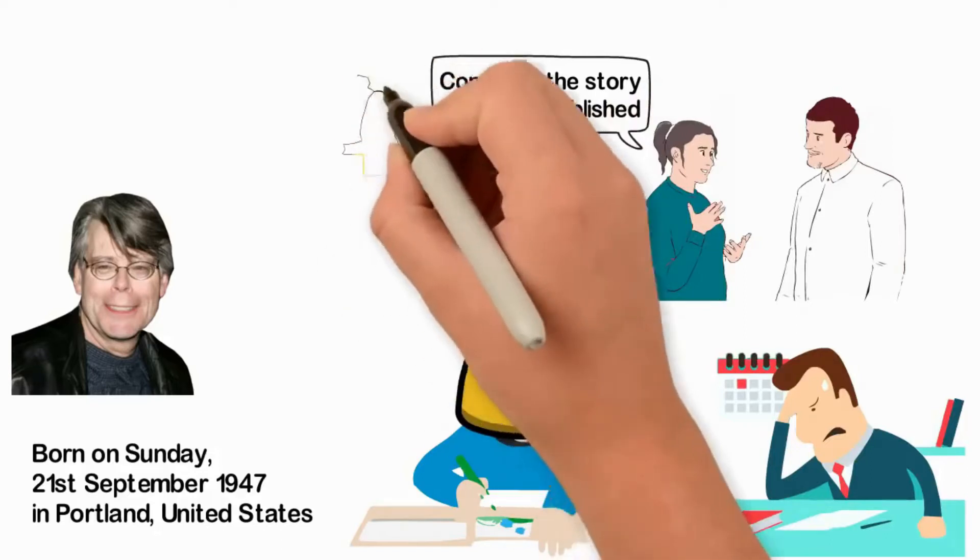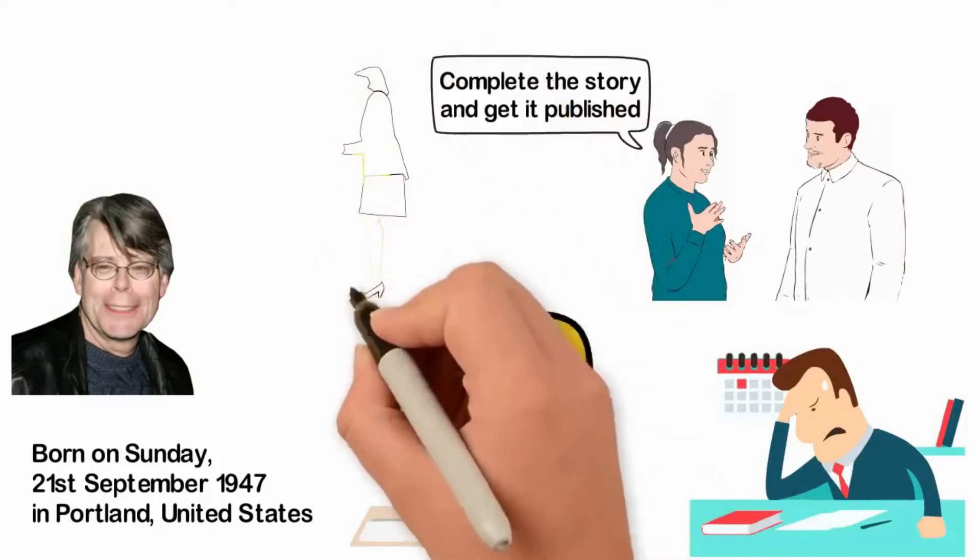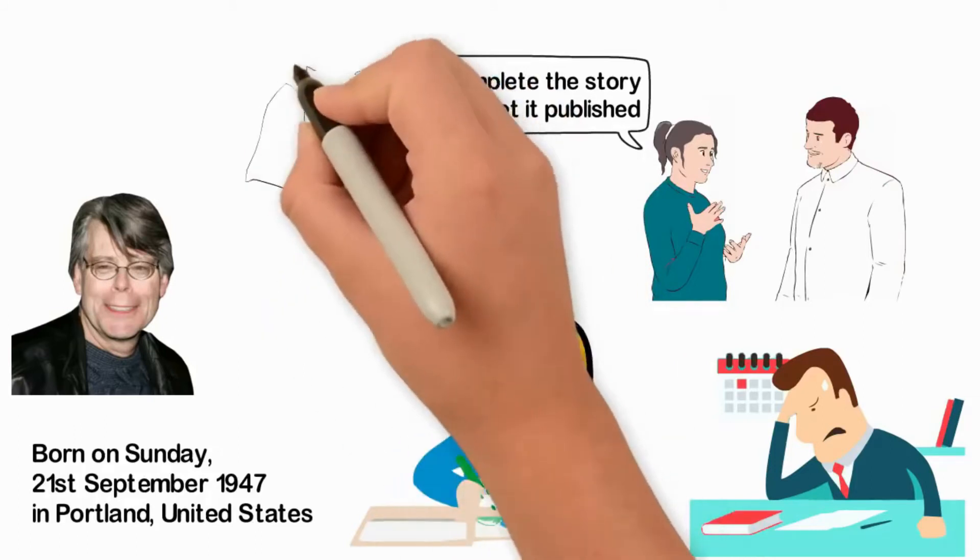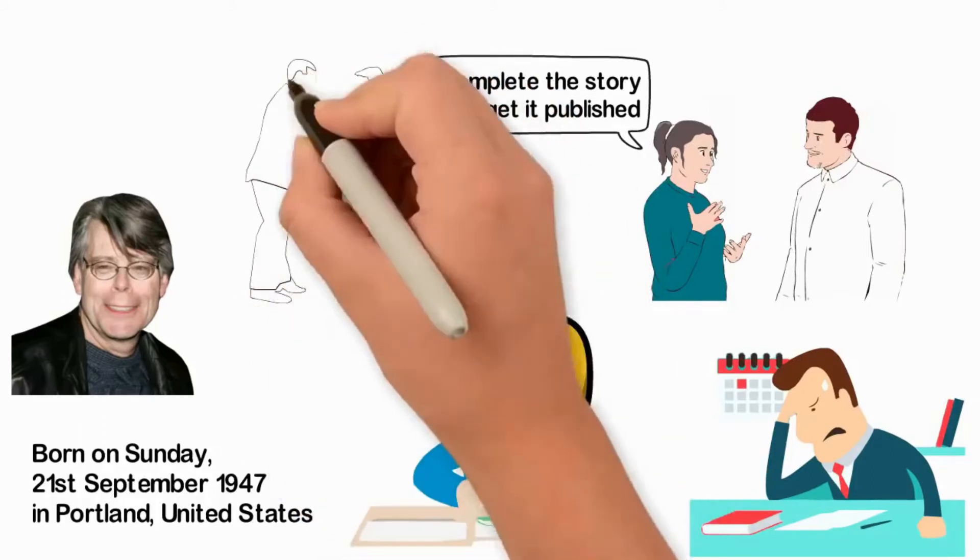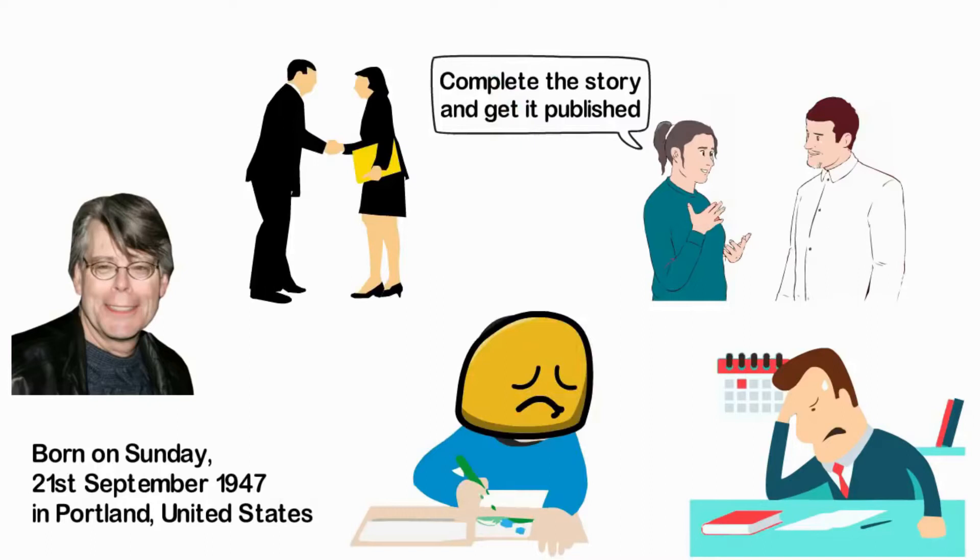By January 1973, King submitted his story to the publisher and a different thing happened. Now he was accepted and his first successful work was published. From that point, Stephen King goes on to become one of the most successful writers the world has ever seen.